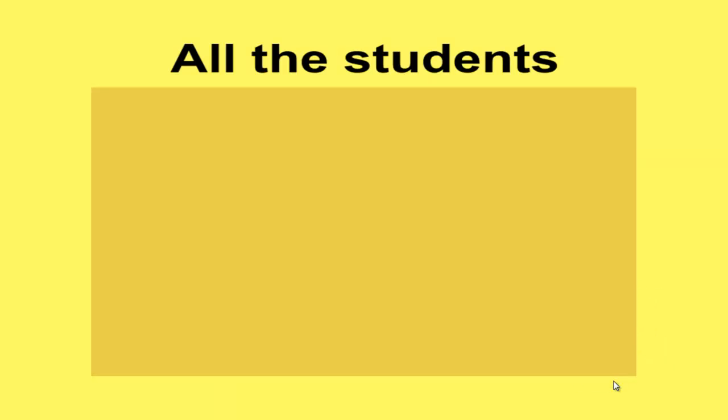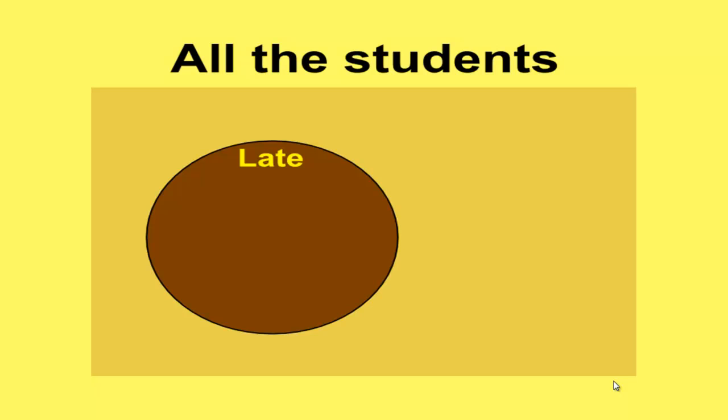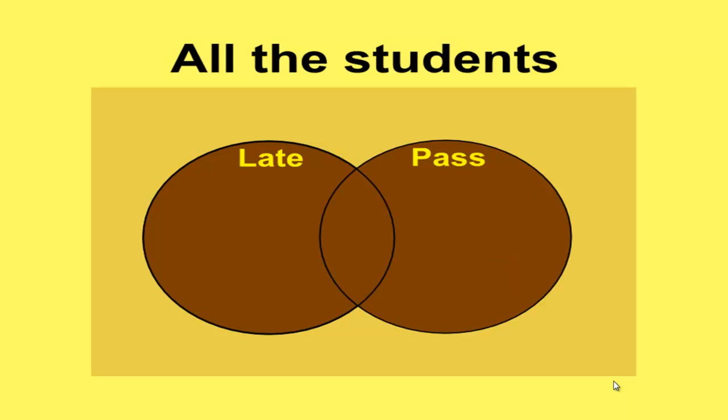Let's imagine that we've got a block of all the students. Now we know that some of those students will turn up late to class, and we know that some of all of our students will actually pass. So now let's start having a look at the logic.